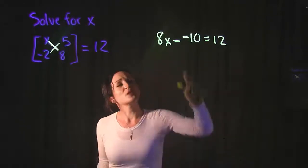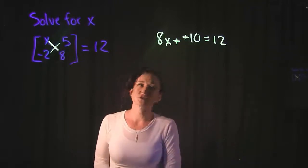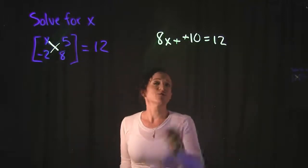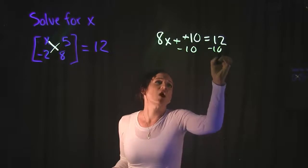So solving this equation, we have the double negative rule here. That minus negative cancels out to plus a positive. So the first thing I'm going to do is subtract 10 on both sides.